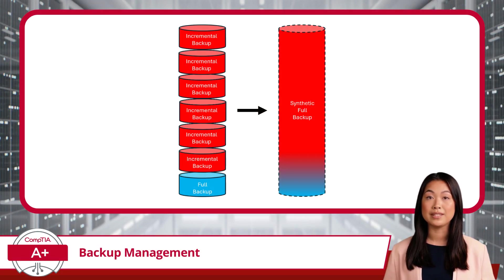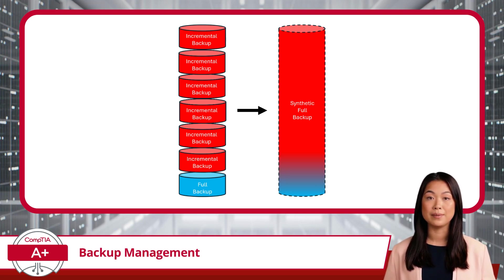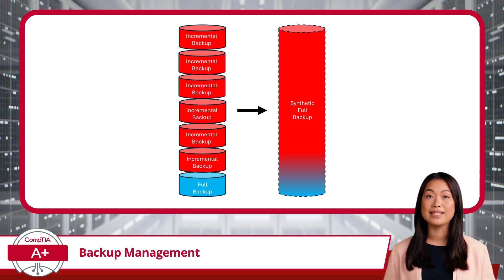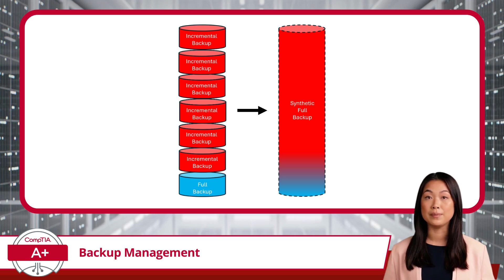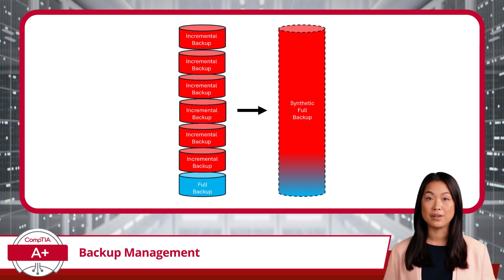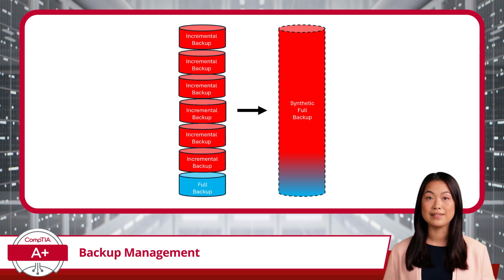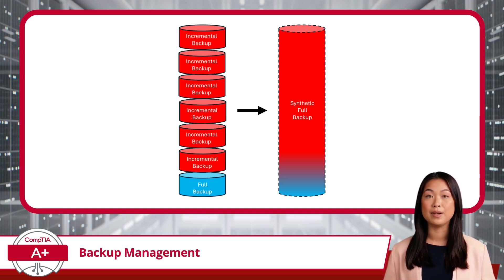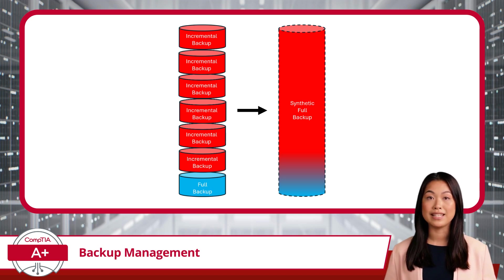If incremental backups are all about maximizing efficiency, synthetic backups take things a step further by combining the best of full and incremental methods. Synthetic backups start with a full backup, just like any other method. However, instead of relying solely on incremental backups for changes, synthetic backups merge the data from incremental backups into a single, fully restorable backup file. Rather than manually piecing together all the changes from incremental backups during recovery, the synthetic backup does that work for you ahead of time. It essentially creates a new, up-to-date full backup without the need to recopy all your data. This process happens automatically during the backup routine, reducing the strain on your network and saving you from a tedious recovery process.